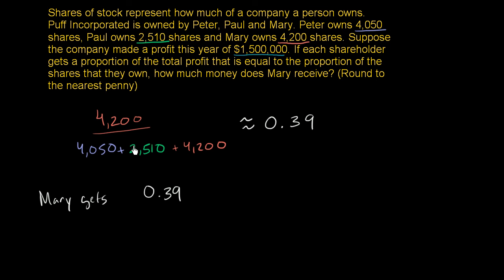And this is the exact quantity right over here. 0.39 is the approximation. This little squiggly equal sign is how I say approximately. She's going to get 0.39 times the total profit, which is $1,500,000.